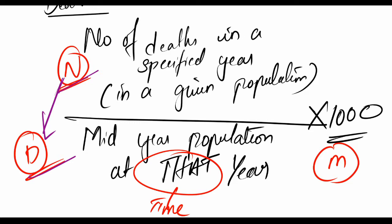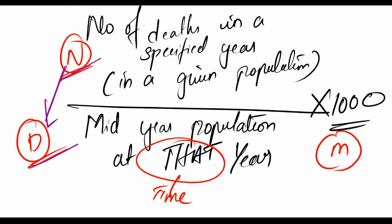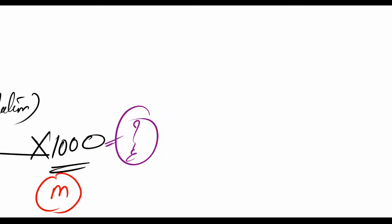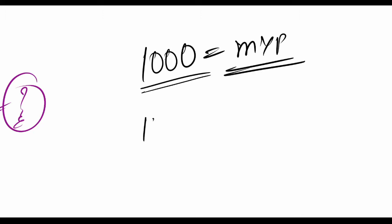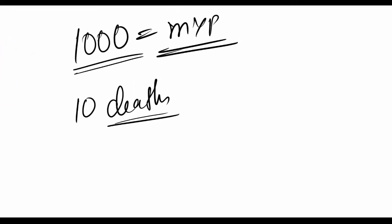So three conditions are met in the death rate: mid-year population as denominator, time is specified as that year, and we have a multiplier of 1000. Now why the multiplier? Imagine there are 1000 people in the population and 10 people died during that specified year.